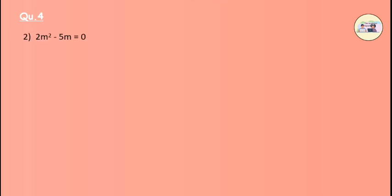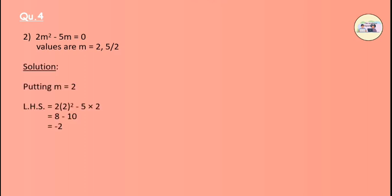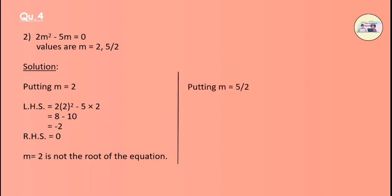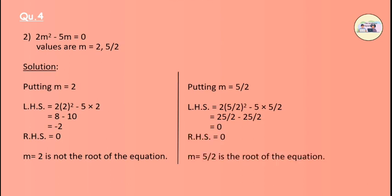Question 4: Determine whether the values given against each of the quadratic equations are roots of the quadratic equation. We have the equation 2m squared minus 5m equals 0, where m equals 2 and m equals 5 by 2. First, put m equals 2 in the equation — we get the answer as minus 2, which is non-zero. Therefore, m equals 2 is not a root. Put m equals 5 by 2 in the equation — after solving, we get 0. Therefore, m equals 5 by 2 is a root of the quadratic equation.